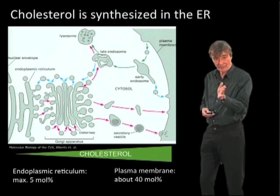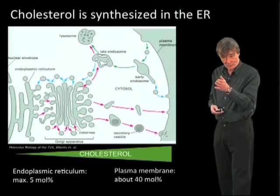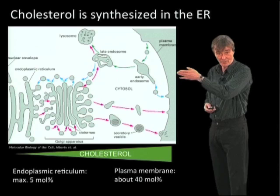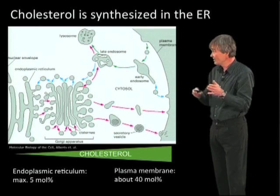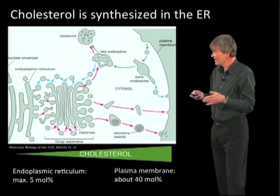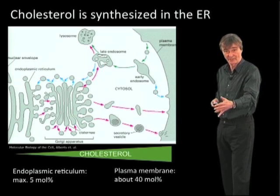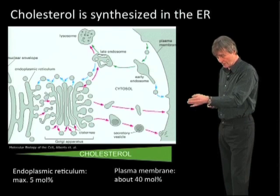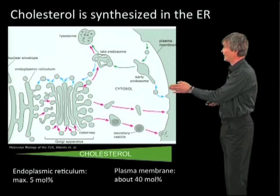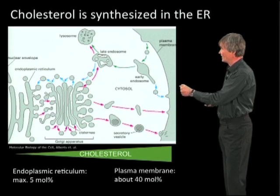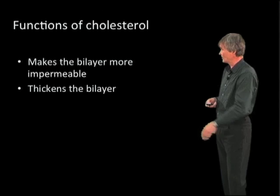After synthesis, cholesterol is moved out towards the Golgi, to the plasma membrane, and to other organelles. There is a gradient: low in the endoplasmic reticulum, higher in the Golgi, and then highest in the plasma membrane. So cholesterol is synthesized in the ER and then moved out.